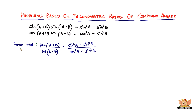The problem says: prove that tan(a+b) divided by cot(a-b) equals (sin²a minus sin²b) divided by (cos²a minus sin²b). So what we have to do is prove that the left-hand side equals the right-hand side.